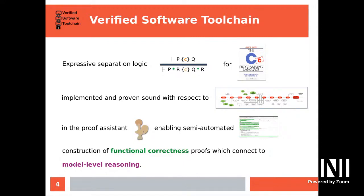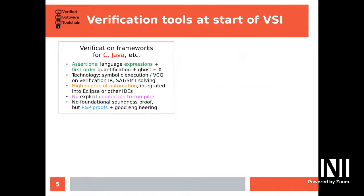We want to be assured that we have the same or at least compatible interpretation of the C language as the compiler does, but also use the environment that the proof assistant gives us to connect code verification to model-level reasoning in whatever application domain your program happens to be about.